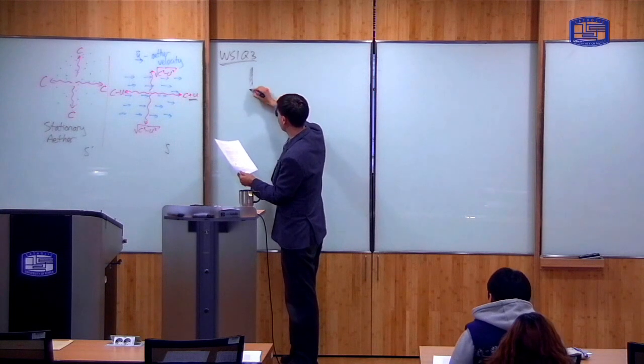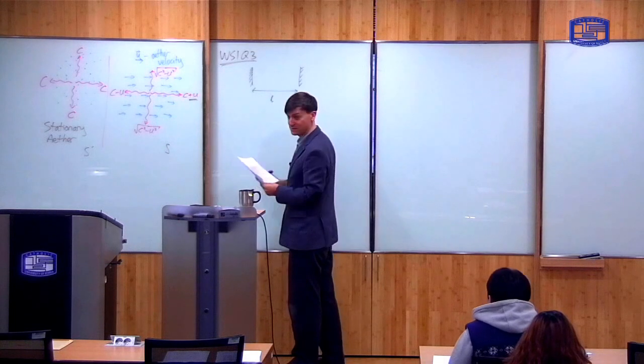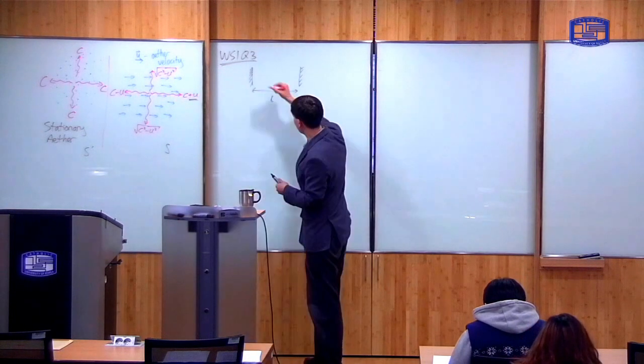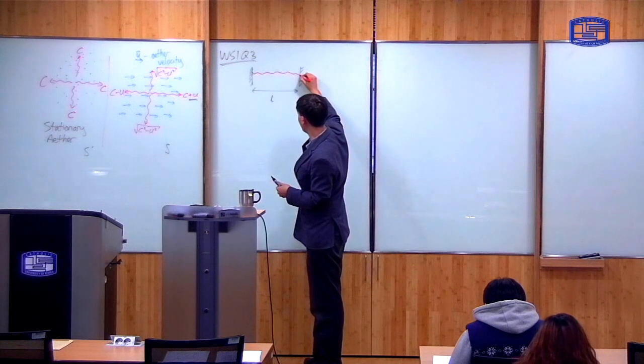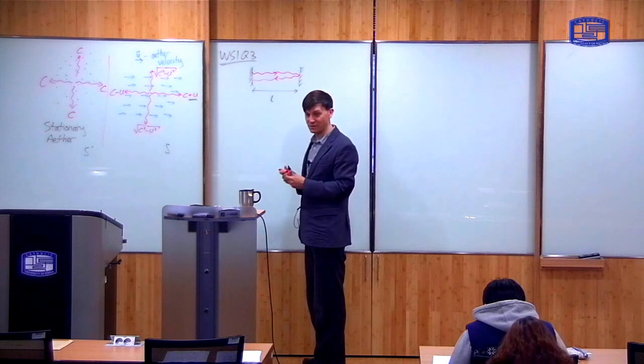So the experiment is this. You have two mirrors, the distance between the mirrors is L. And what you do is you measure the time it takes for light to move between these two mirrors here, and then back along. Let's do that.